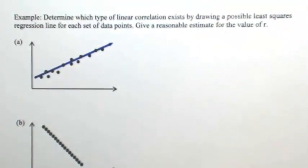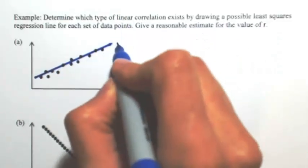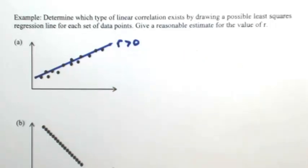So as you can see, first of all, this line would have a positive slope. So that means your r is going to be greater than zero. It has a positive slope and it's pretty close to a lot of the points.